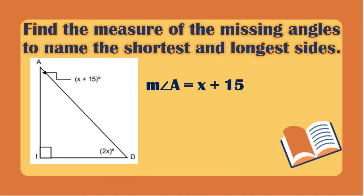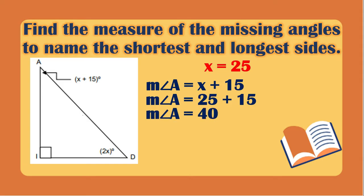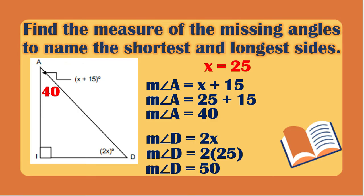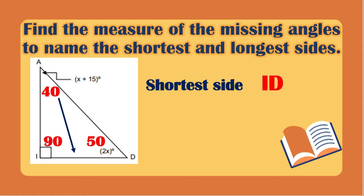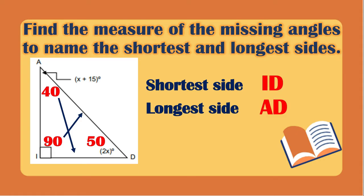Now we find each angle. The measurement of angle A is x plus 15; substituting x equals 25, it becomes 25 plus 15 which is 40. The measurement of angle D is 2x, so 2 times 25 equals 50. Angle I is 90 degrees. For the shortest side, the smallest angle is angle A at 40 degrees, and its opposite side is ID. For the longest side, 90 degrees gives us side AD.